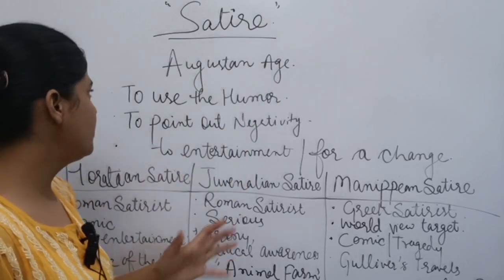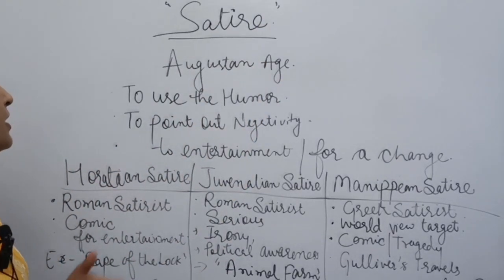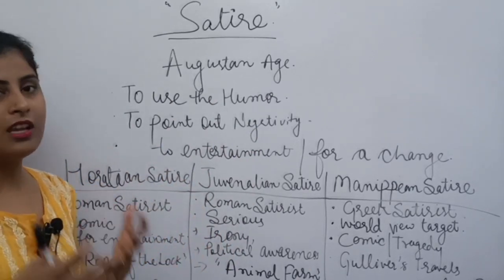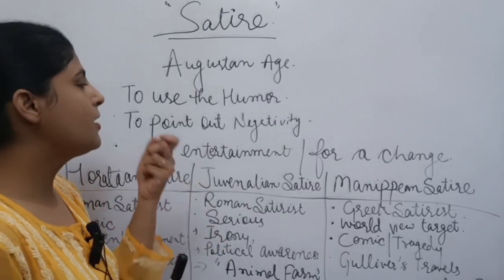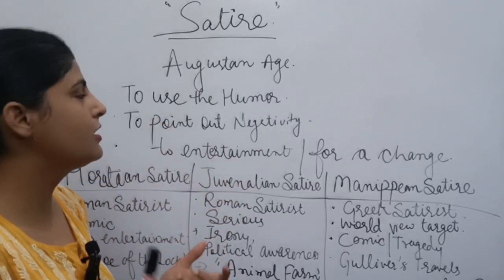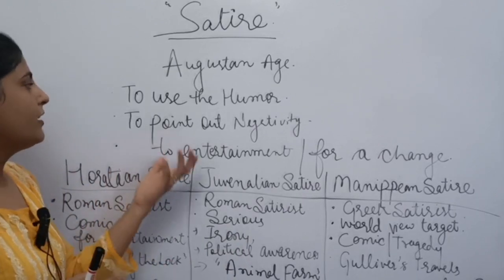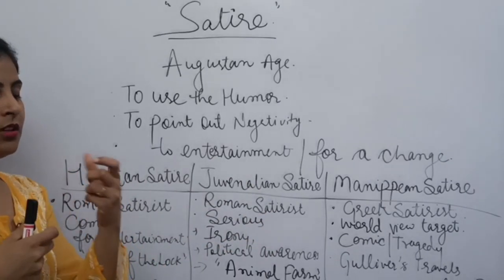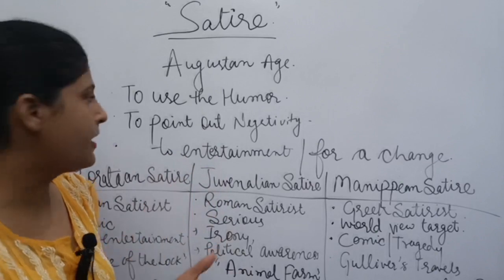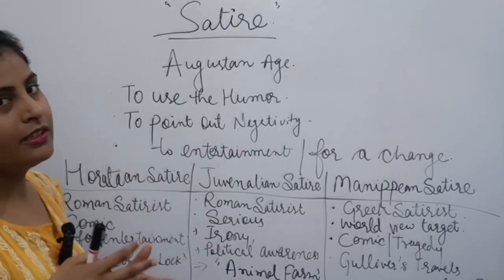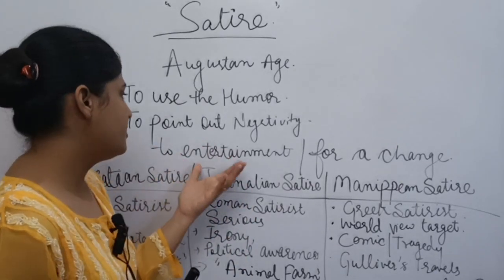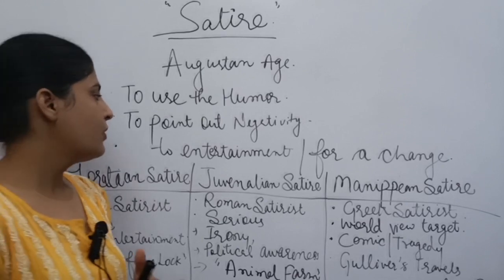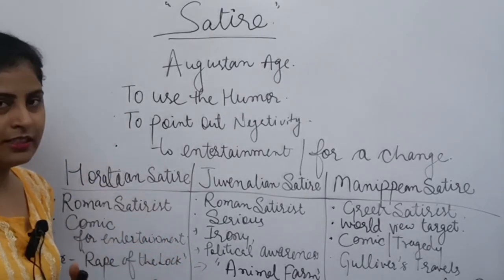Satire was very popular in the Augustan age. One of its specialties is the use of humor — to laugh in a funny way. It means hum funny way se kisi ka mzaak udana ya kisi ki tippani karna — to point out and highlight someone's negativity, us ka mzaak udana, that is called satire. It was written in literature just for entertainment or to bring a change in society. It is also of three types.